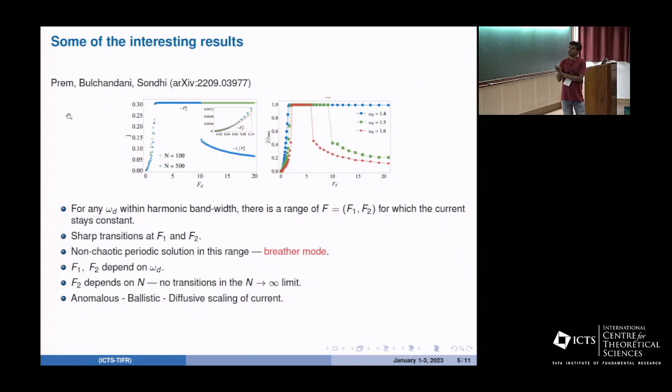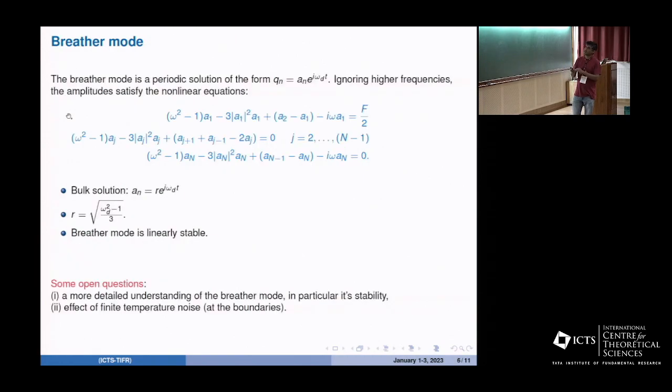In this regime the system gets into a very periodic state called a breather mode. If you look at the nature of transport in these three regimes - the initial growth regime, the flat regime, and the decaying regime - here it's anomalous transport where current scales as one by n to the power 0.5 or something. In the flat regime it's independent of system size, and in the decaying regime it decays as one by n which is like diffusive transport.